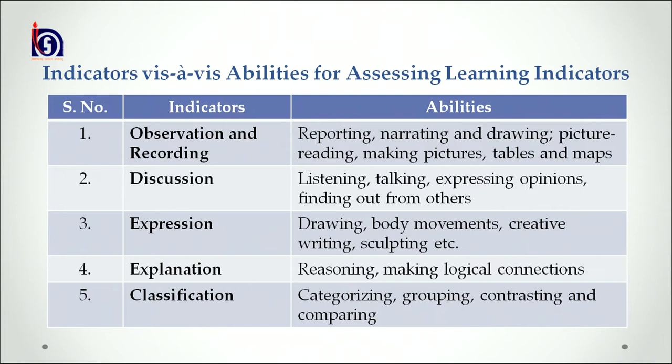The second indicator is discussion, with associated abilities of listening, talking, expressing opinions, and finding out from others. The third indicator is expression, and the abilities associated with it are drawing, body movement, creative writing, and sculpting. This means assessing how the student expresses his or her learning — whether through drawing, kinesthetic movement, creative writing, or creating a piece of art.